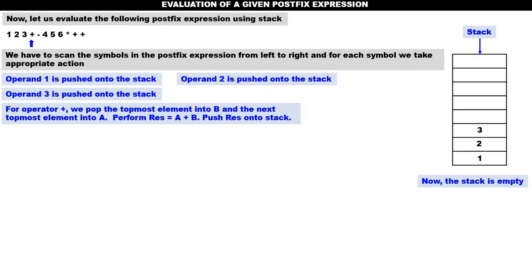What is the topmost element? Three. Pop three into B. Pop two — the next topmost element — into A. Perform RES = A + B. That is two plus three equals five. Push five onto the stack.